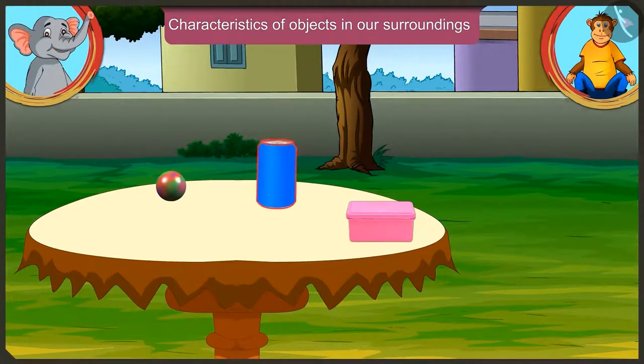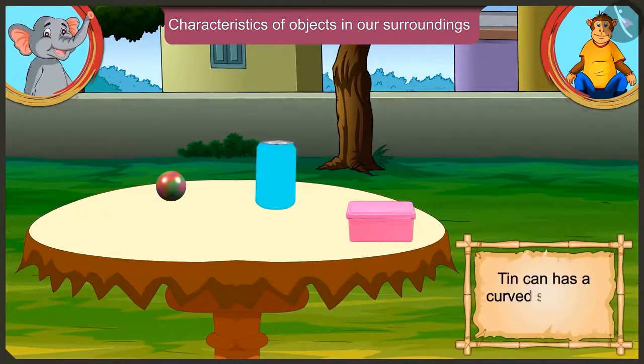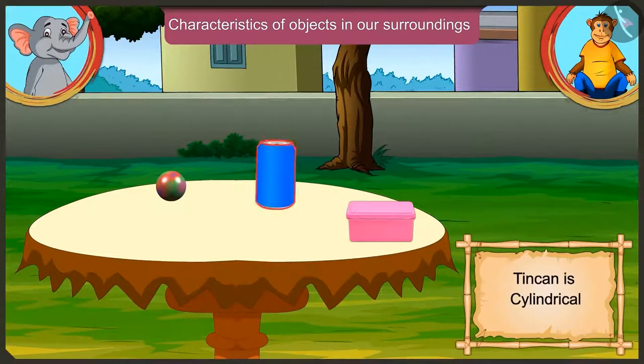And the tin can? Hey, this can stand upright, like the lunchbox. But it is also curved like the marble. So does it have a curved surface or a flat surface? It has a cylindrical shape. That means it is a cylinder.